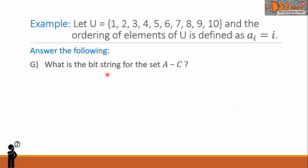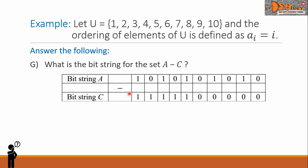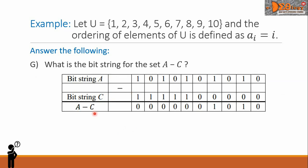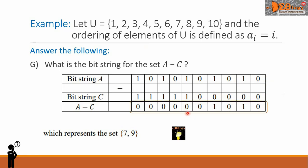Letter G: what is the bit string for the set A minus C? The bit strings A and C are here. For the difference, remember that A minus C will only be 1 if A is 1 and C is 0. So: 1-1=0, 0-1=0, 1-1=0, 0-1=0, 1-1=0, 0-0=0, 1-0=1, 0-0=0, 1-0=1, 0-0=0. This bit string represents the set with elements 7 and 9. This is the final answer.